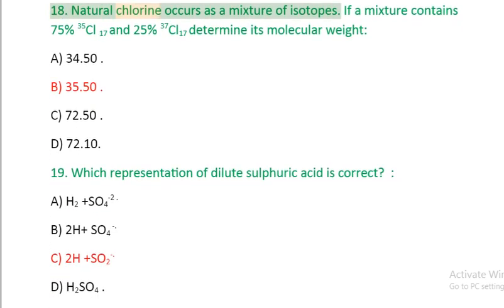Question 18: Natural chlorine occurs as a mixture of isotopes. If a mixture contains 75% ³⁵Cl₁₇ and 25% ³⁷Cl₁₇, determine its molecular weight: A. 34.50, B. 35.50, C. 72.50, D. 72.10.